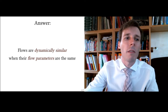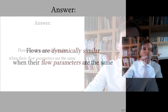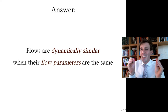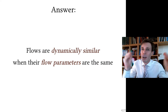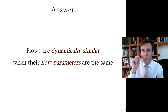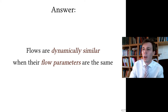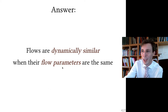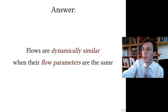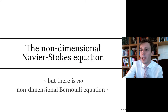What we want is flows that are dynamically similar, which means they are exact miniature or enlarged versions of one another. Flows are dynamically similar when the flow parameters are the same. What we're trying to define here is what those flow parameters — what this term 'dynamically similar' — means and how to make those the same.